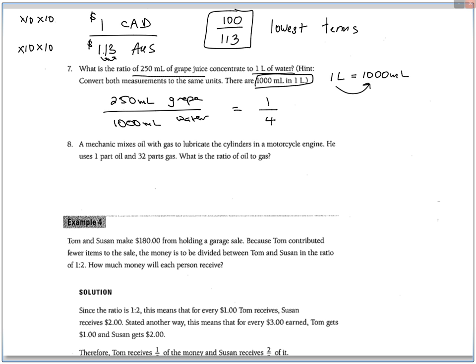A mechanic mixes oil with gas to lubricate cylinders in a motorcycle engine. He uses one part oil to 32 parts gas. What is the ratio of oil to gas? Well, it's exactly 1 to 32. So this guy knows that if he needs to make this solution, for every one part oil, he puts 32 gas. So if he has to put in two parts oil, he'll put in 64 gas, and so on. You just count like that.